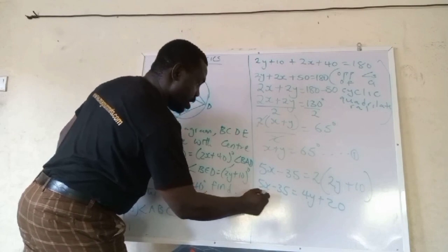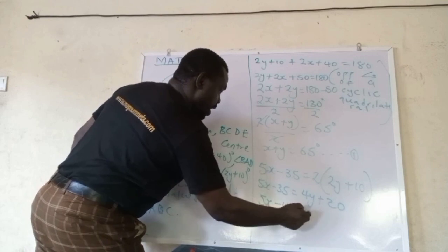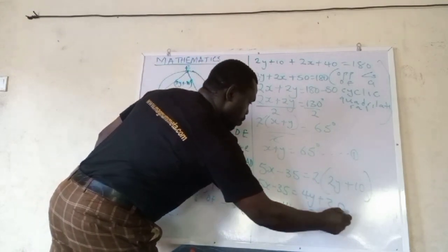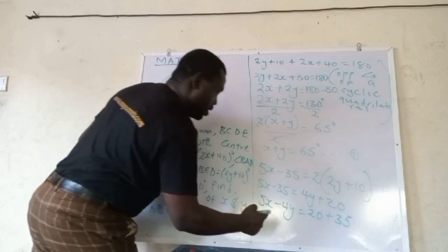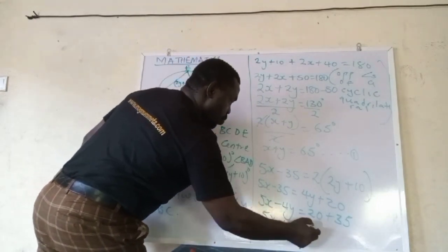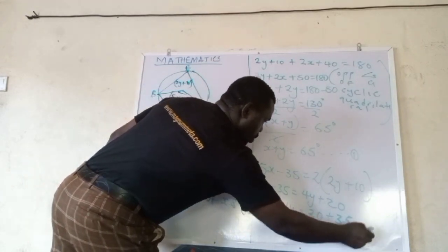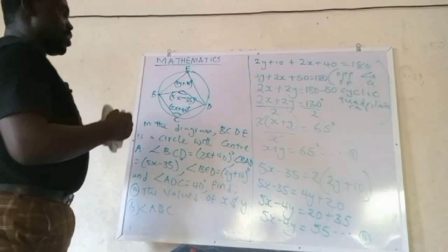So what do we have here now? 5x minus 4y equals 20 plus 35. So we have 5x minus 4y equals to 55. That's equation 2.